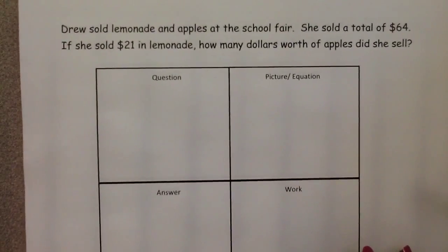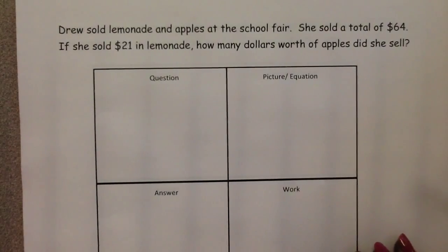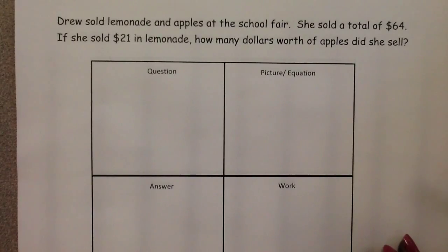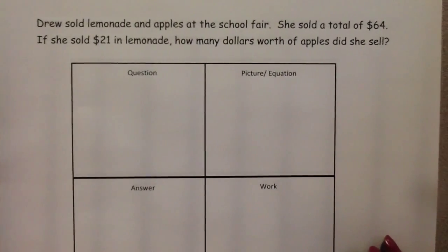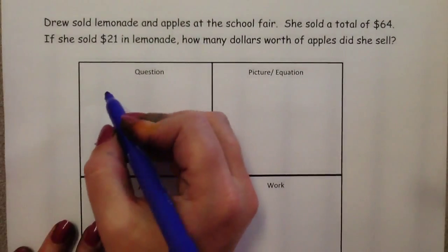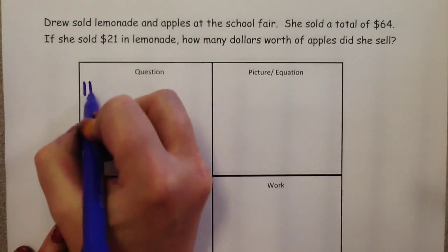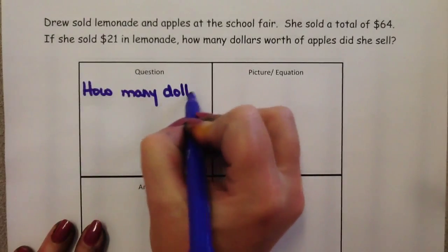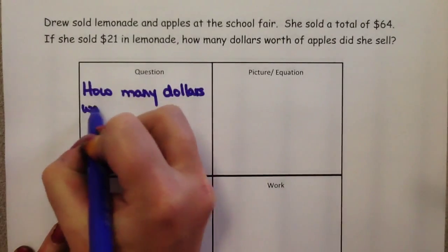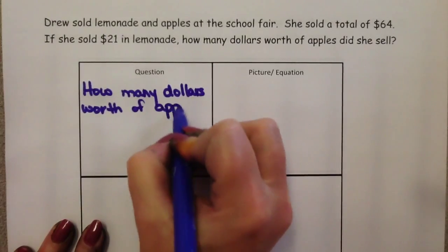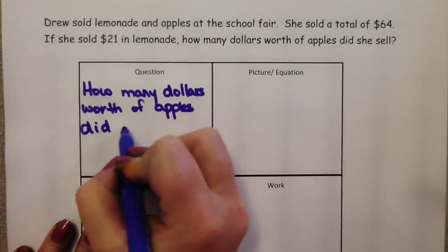Let's try it on another problem. Drew sold lemonade and apples at the school fair. She sold a total of $64.00. If she sold $21.00 in lemonade, how many dollars worth of apples did she sell? We start with our question, and the question the children need to find is: how many dollars worth of apples did Drew sell?